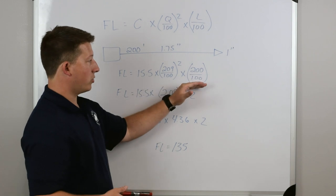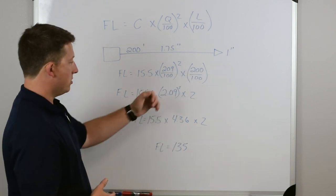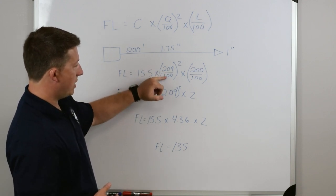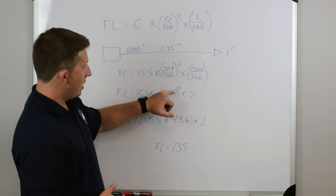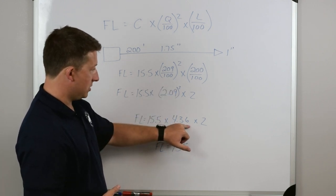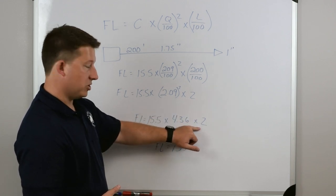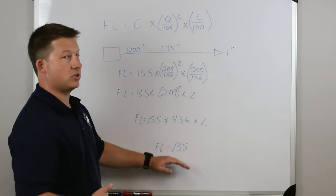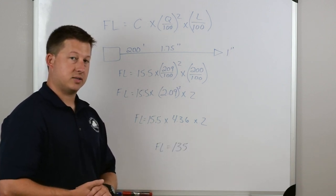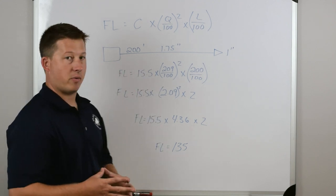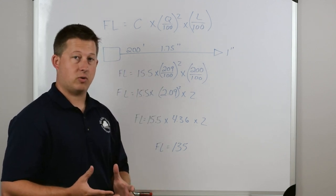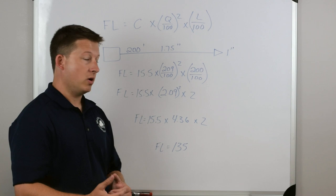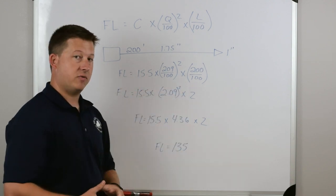Once we know the GPM is 209, we can plug that into Q. The length is 200 feet, so 200 divided by 100 equals 2 for our L. Simplifying: 15.5 times (209 divided by 100 is 2.09, squared is 4.36) times 2. So we have 15.5 times 4.36 times 2, giving us a friction loss of 135 psi. This example illustrates that you must go back and calculate GPM through the smooth bore when it isn't directly provided.